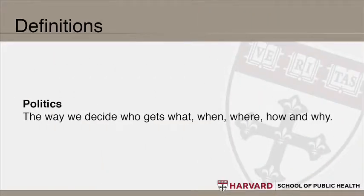The second essential term is politics, because in policy, politics is always there. People use the word politics all the time and have a very hard time coming up with a definition for what it means. My favorite definition: politics means the way we decide who gets what, when, where, how, and why. If you just remember those three words — who gets what — you're going to be grounded in policy.